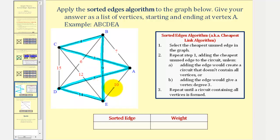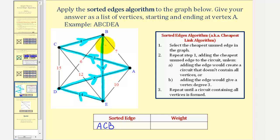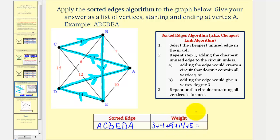The next cheapest edge would be edge AE with a weight of ten, which we cannot use because that would give vertex A degree three. So the next cheapest edge would be edge CE with a weight of twelve, which we also cannot use because that would give vertex C degree three. The next cheapest edge would be edge DE with a weight of fourteen, which does complete our circuit. So listing the circuit starting at vertex A: A, C, B, E, D, A with a total weight of three plus four plus nine plus fourteen plus five, which is 35.